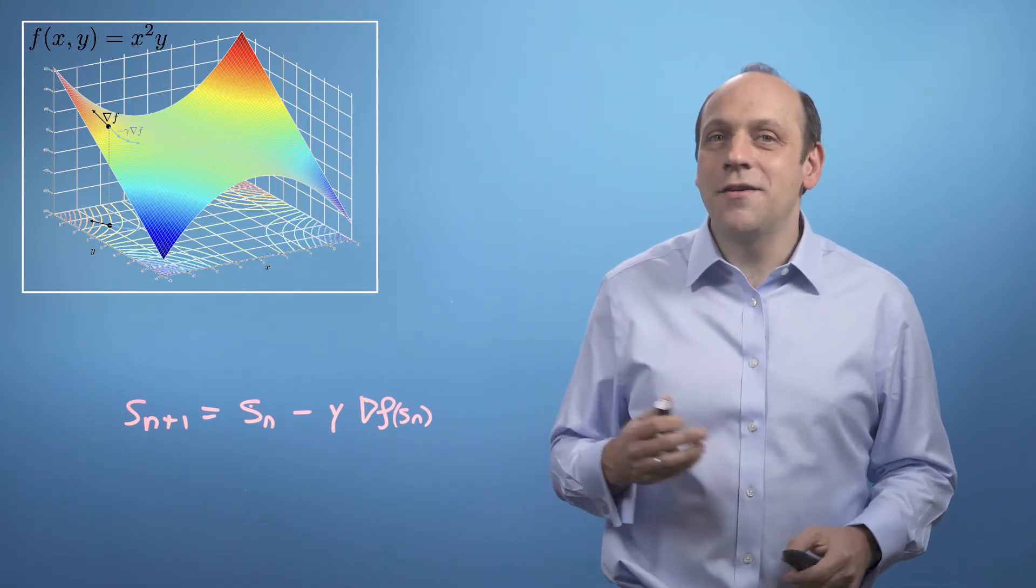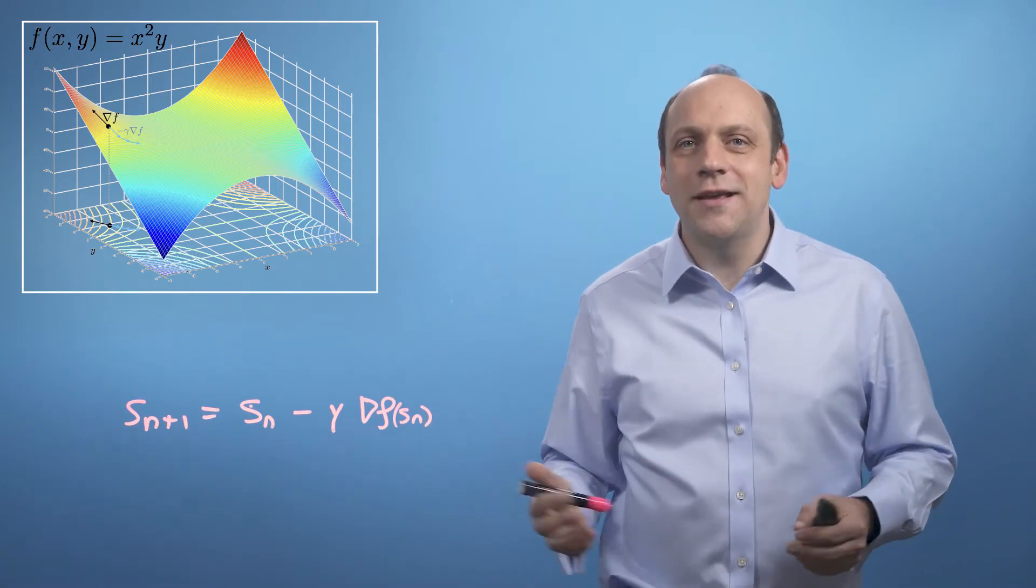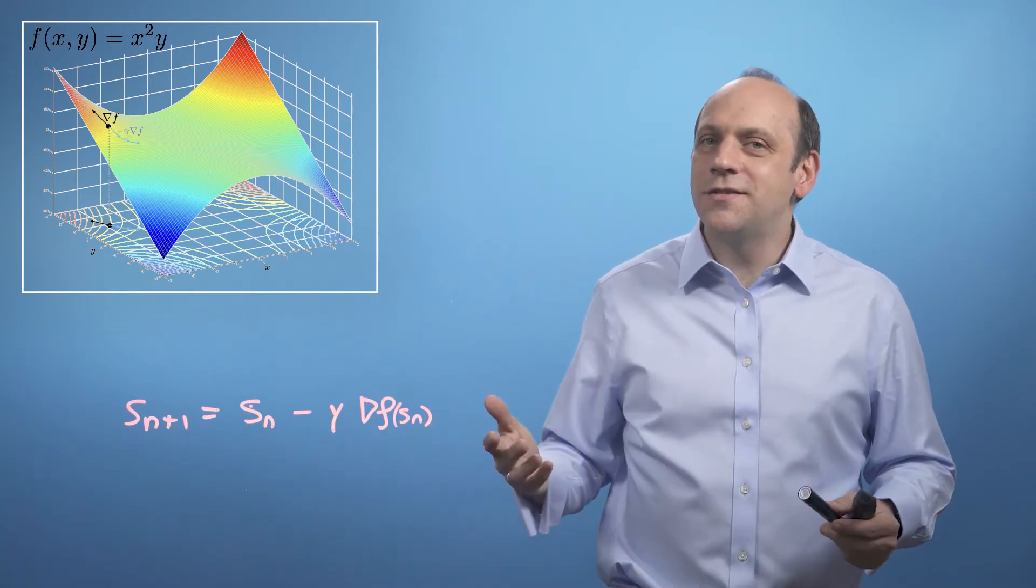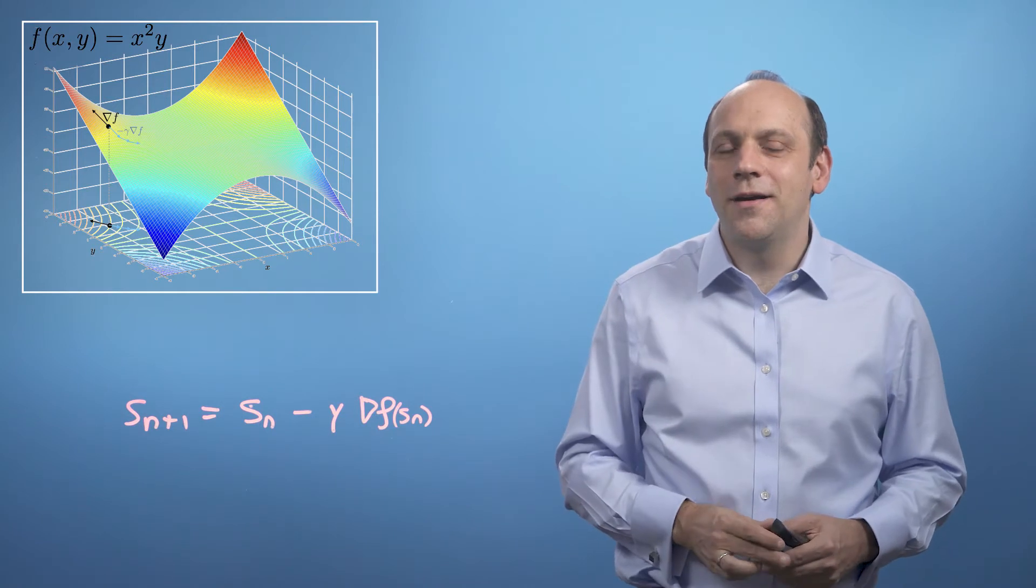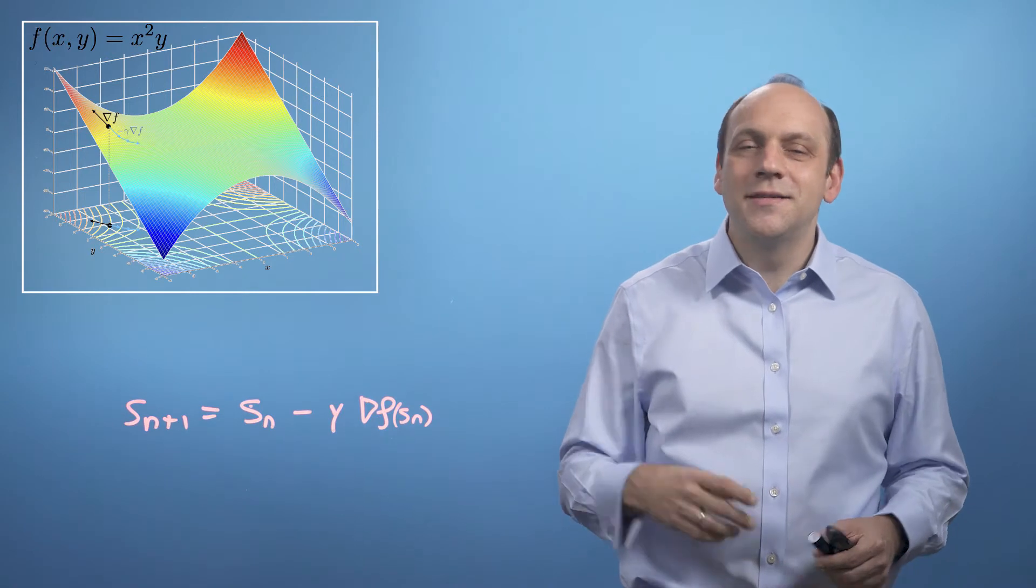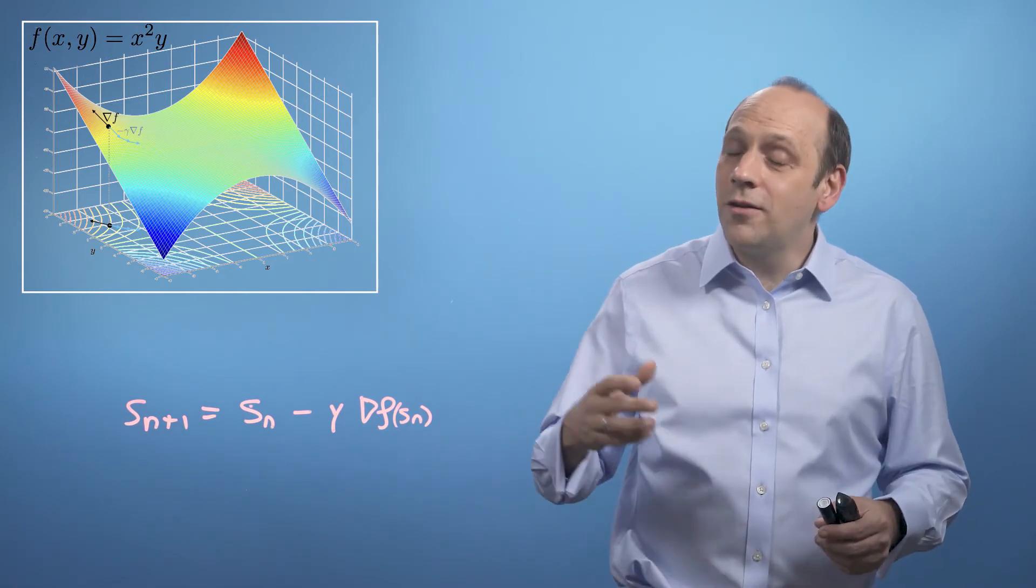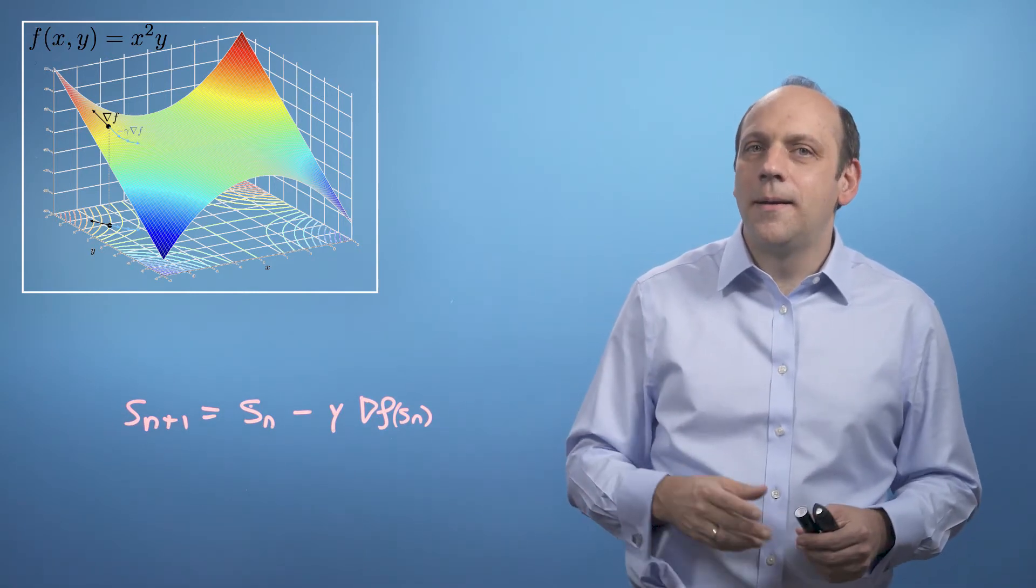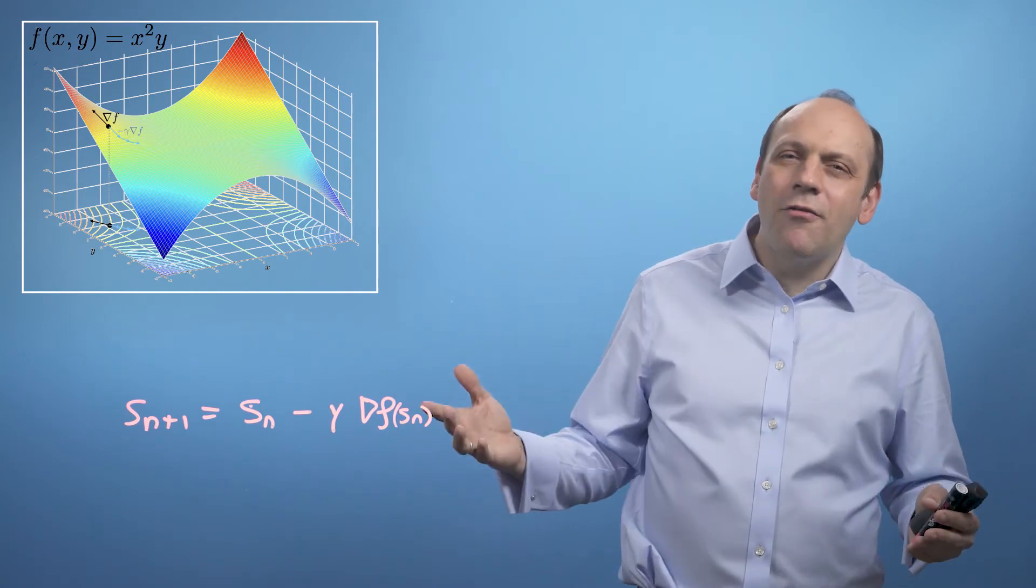If we overshoot, that's okay, because grad will just take us back to the minimum. And notice that as the gradient gets shallower, as we come towards the turning point, then the steps automatically get smaller, because grad gets smaller. So this is quite a nice method. There are lots of ways to enhance it, but that's the main idea. It's very powerful and simple.